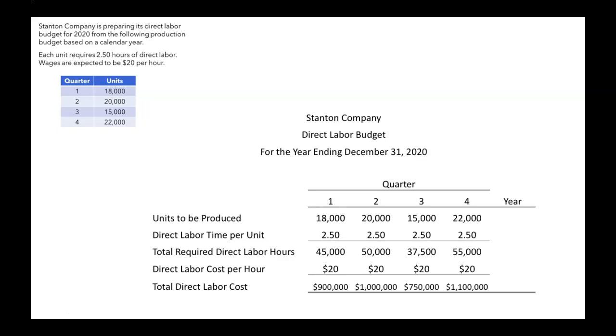In quarter one we're expecting to spend $900,000 on direct labor, quarter two a million dollars, and so on.